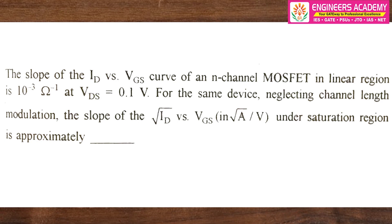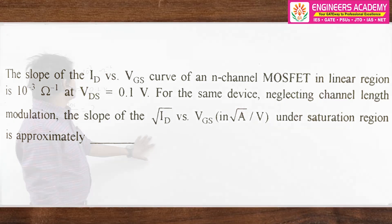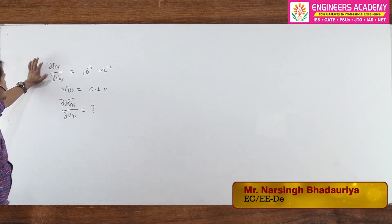Hello students. This question is from the 2014 GATE exam for two marks, and it is a little bit easy. The question is: the slope of Id versus Vgs curve of an N-channel MOSFET in the linear region is 10⁻³ Ω⁻¹ at Vds = 0.1 V. For the same device, neglecting channel length modulation, the slope of √Id versus Vgs in the saturation region is approximately?